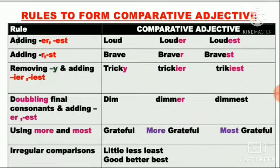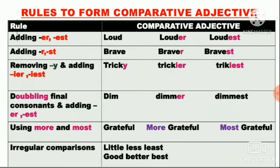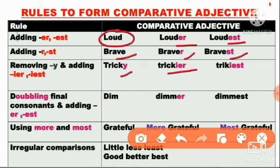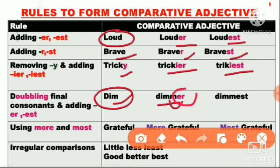Ab kuch rules dekhenge to form comparative adjectives. For example, the word loud — we add er and est to make louder and loudest. Kuch words ke saath sirf r add karte hai — like brave, braver, bravest — jab pehle se hi e hota hai. Agar y hai word ke last mein, toh y ko replace karke i-er add karte hai, and superlative mein i-est. In certain words like dim, the last consonant doubles — d-i-m becomes dimmer and dimmest.